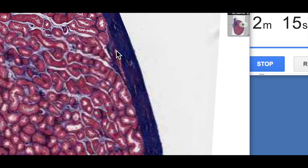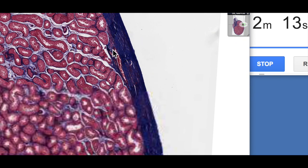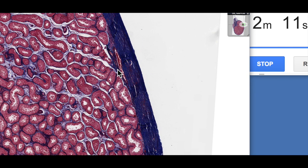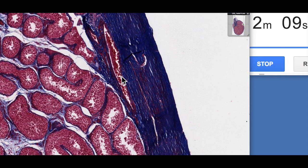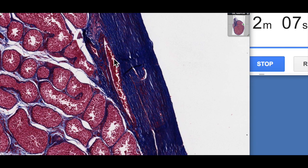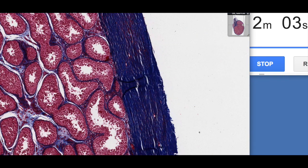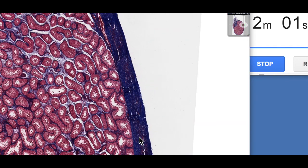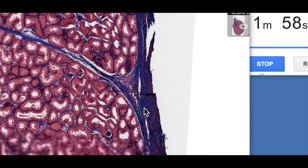Now immediately beneath this layer, this tunica albuginea, is a layer known as the tunica vasculosa. Vasculosa means blood vessels. So here you can see a blood vessel in another section over here. And if we zoom around we can actually see a number of these smaller blood vessels and larger blood vessels.